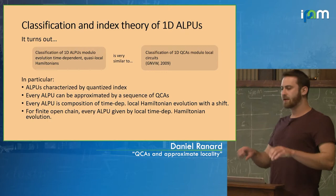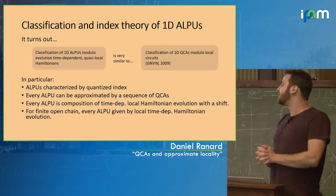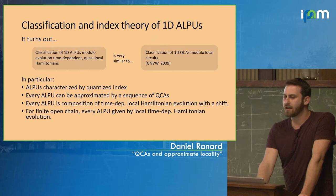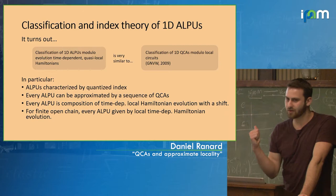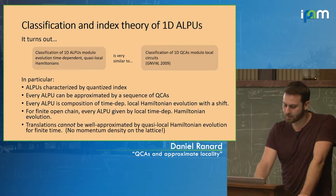For the finite open chain — on an interval rather than the full integers — the index is going to end up being zero, which means any ALPU on an interval will be generated by some Hamiltonian. We were unable to solve the case of S1. If you have an ALPU on S1 I don't know what the classification is. I strongly expect it's the same GNVW index, but we weren't able to show that yet.